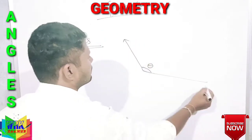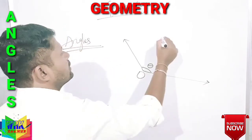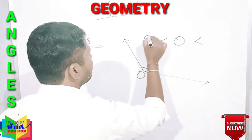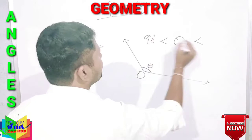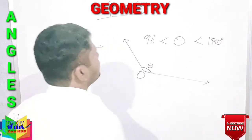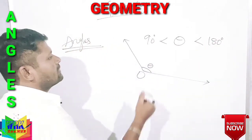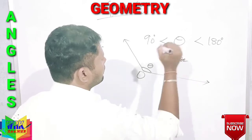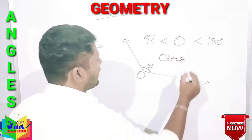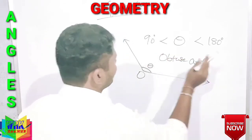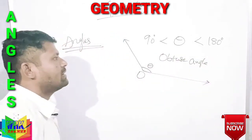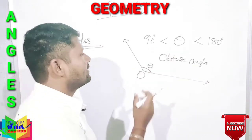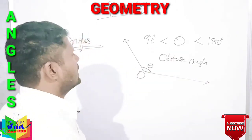Third one: if theta lies between 90 degrees and 180 degrees, then it is said to be an obtuse angle.